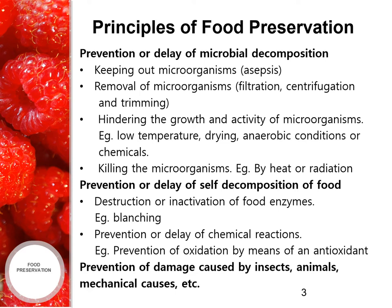The second principle is prevention or delay of self-decomposition of food, which is achieved by destruction or inactivation of food enzymes by blanching, and the second one is prevention or delay of chemical reactions — for example, prevention of oxidation by means of an antioxidant. The third principle is prevention of damage caused by insects, animals, mechanical causes, etc.